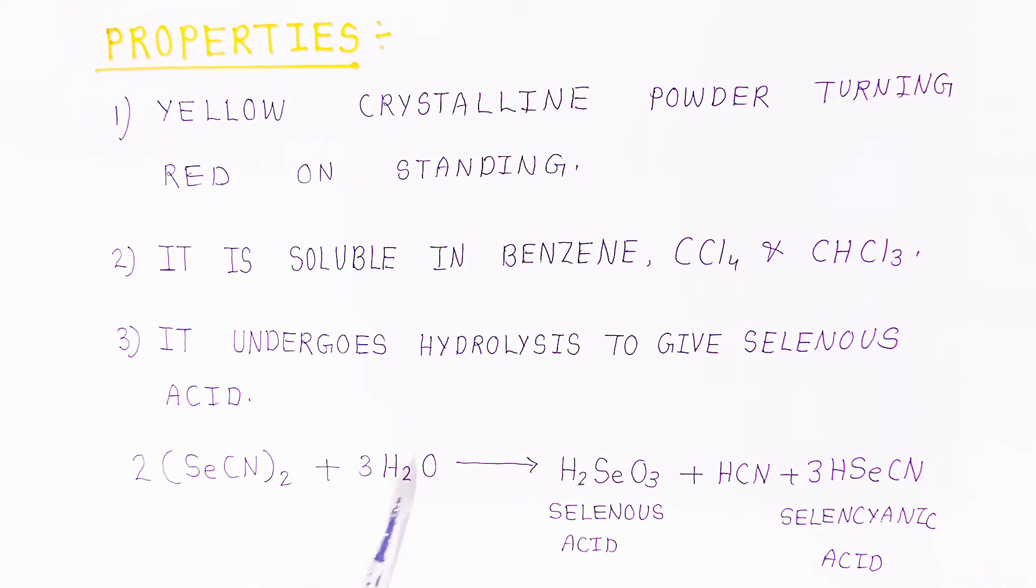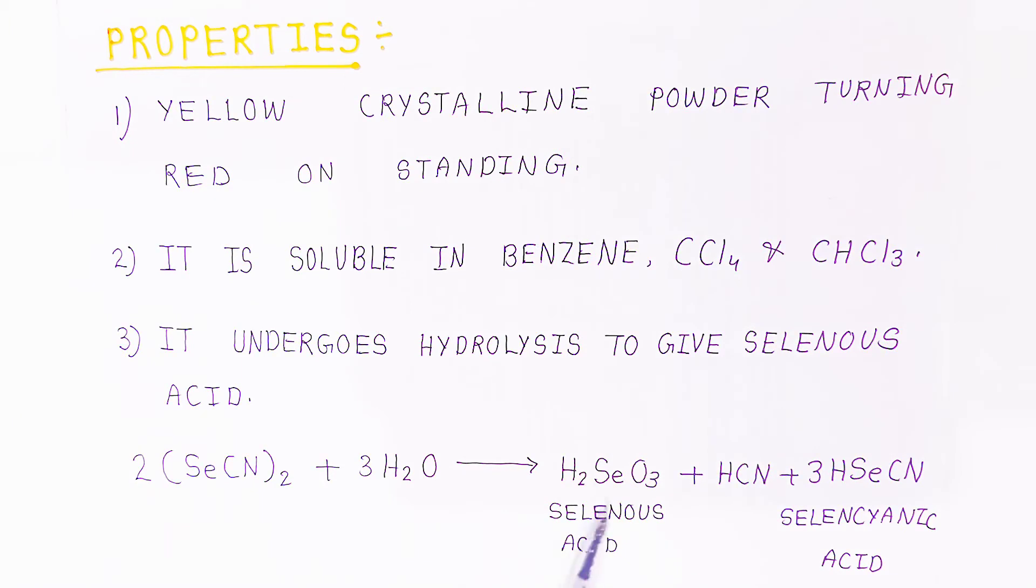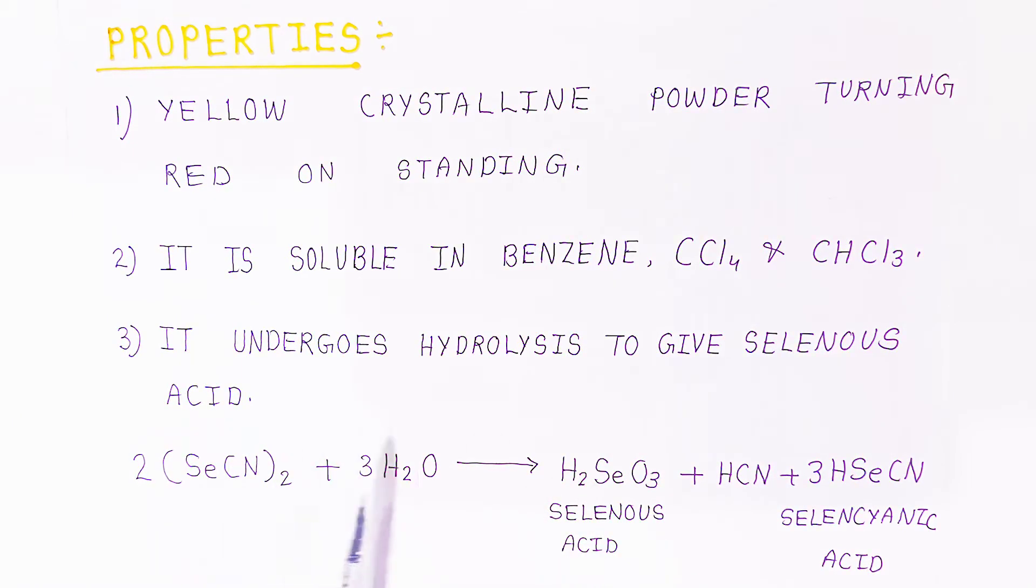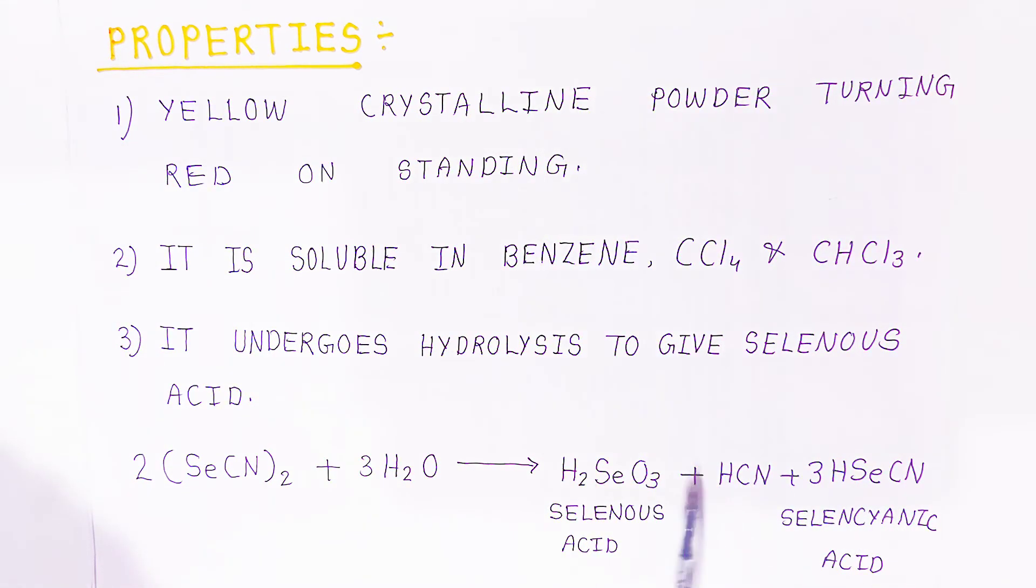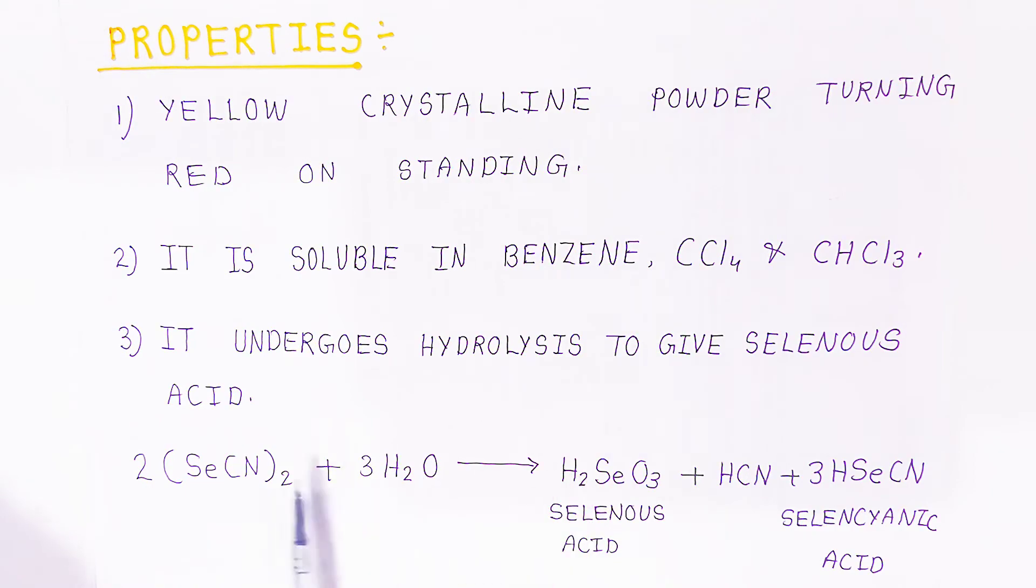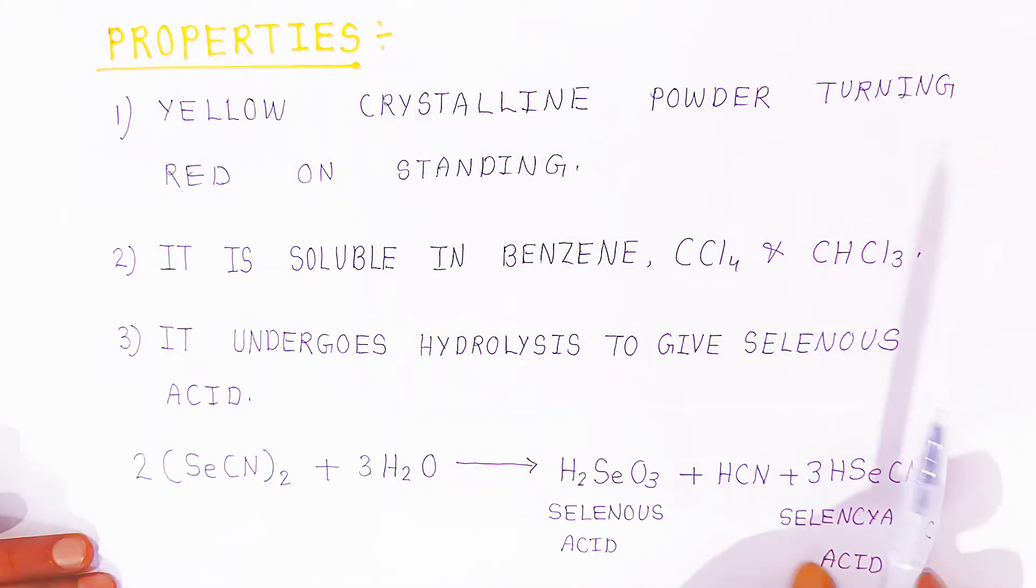Selenocyanogen can undergo hydrolysis to give selenous acid. Selenocyanogen reacts with water molecules to give selenous acid, selenocyanic acid, and hydrogen cyanide. Three types of compounds you are getting if you are adding water because of hydrolysis.